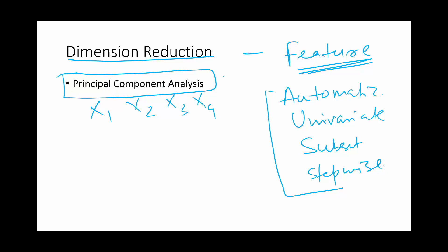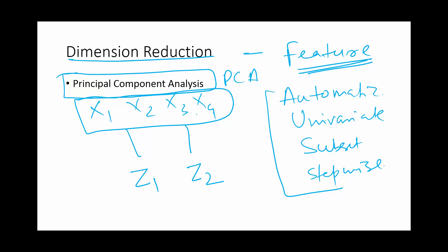Using PCA or principal component analysis, you can actually combine four features in such a way that it reduces to a smaller set of features. For example, by combining x1, x2, x3, x4, we could find two different variables called g1 and g2. Combining four independent variables or four features, we could find two different features z1 and g2 which together retain the prediction power of all four variables. The prediction power of x1, x2, x3, x4 combinedly is retained by g1 and g2. They are two different variables — g1 is a linear combination of some of these variables, and g2 is also a linear combination of some of these variables. So we are combining variables to find principal components.